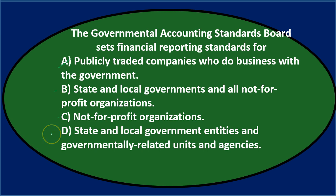Option D says state and local government entities and governmentally-related units and agencies. Of B, C, and D, option D sounds like the most correct answer. When an answer contains more specific, qualifier-type language, it's often correct because it eliminates cases where the answer would not apply.